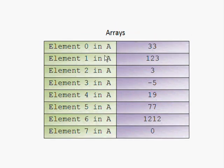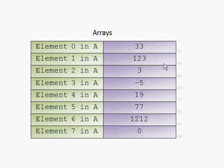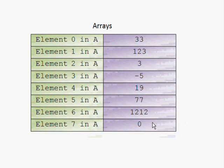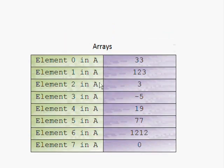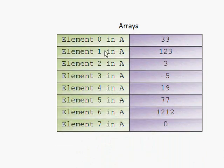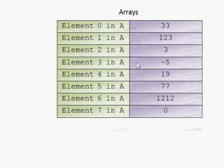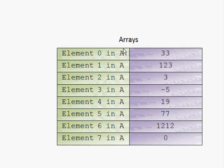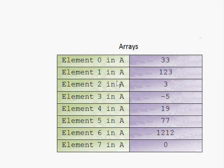You can see here the variable at position 0 is 33, at position 1 it's 1, 2, 1, 2, 1, 2, and so on. So this is basically what an array is. All these eight elements have the same name — they are all called A.